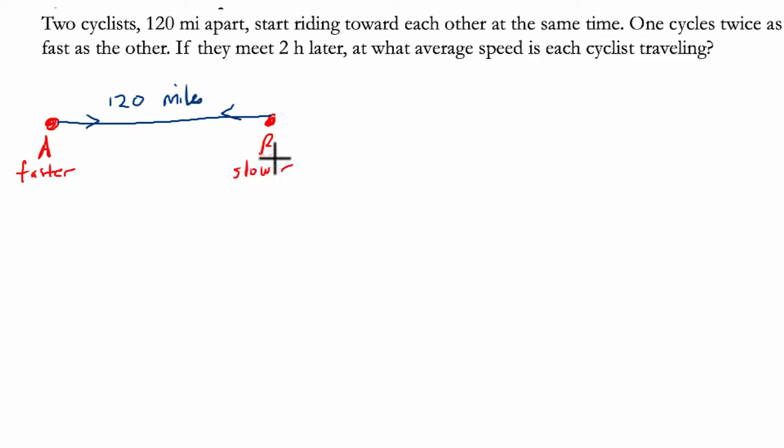B is the slower cyclist. Or maybe they're just riding against the wind and slowing them down. Either way, here we have A, the faster cyclist, and B, the slower.